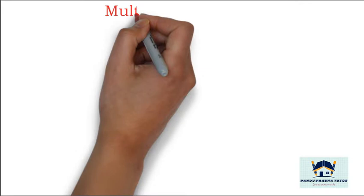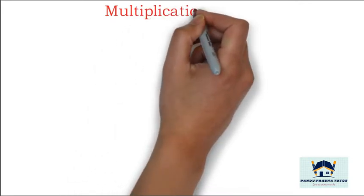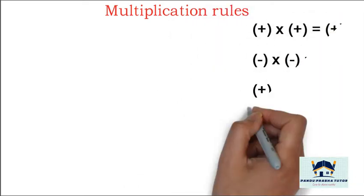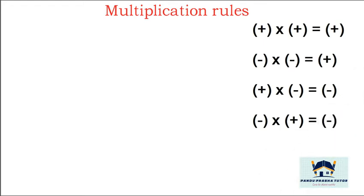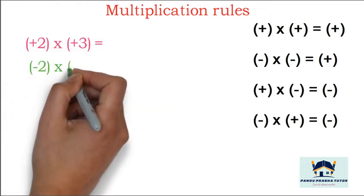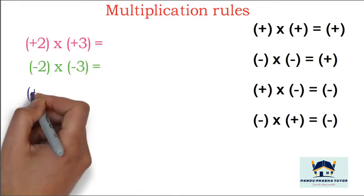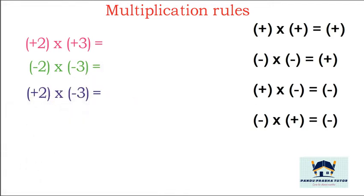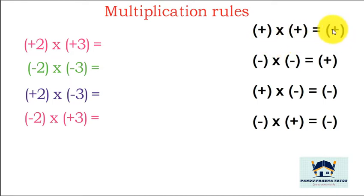Now we will discuss the multiplication rule. We have memorized: plus into plus is equal to plus, minus into minus is equal to plus, plus into minus is minus, and minus into plus is minus. It is not possible to multiply signs alone — signs with numbers can be multiplied. We will take examples: plus 2 into plus 3, minus 2 into minus 3, plus 2 into minus 3, and minus 2 into plus 3. Use this formula and write the answer.